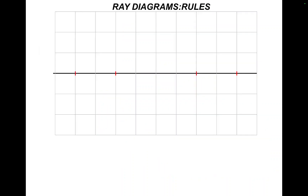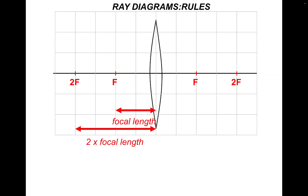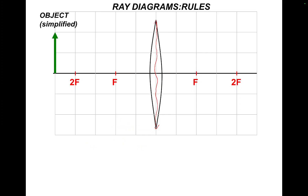We need to establish some rules for ray diagrams. A ray diagram will look something like this — you've got your lens in the middle, which is a convex or converging lens. You could just draw it as a simple straight line. You'll need focal lengths marked: put F maybe three or four centimetres from the lens, and 2F is double that. The object is shown simply as its height — that's the setup.